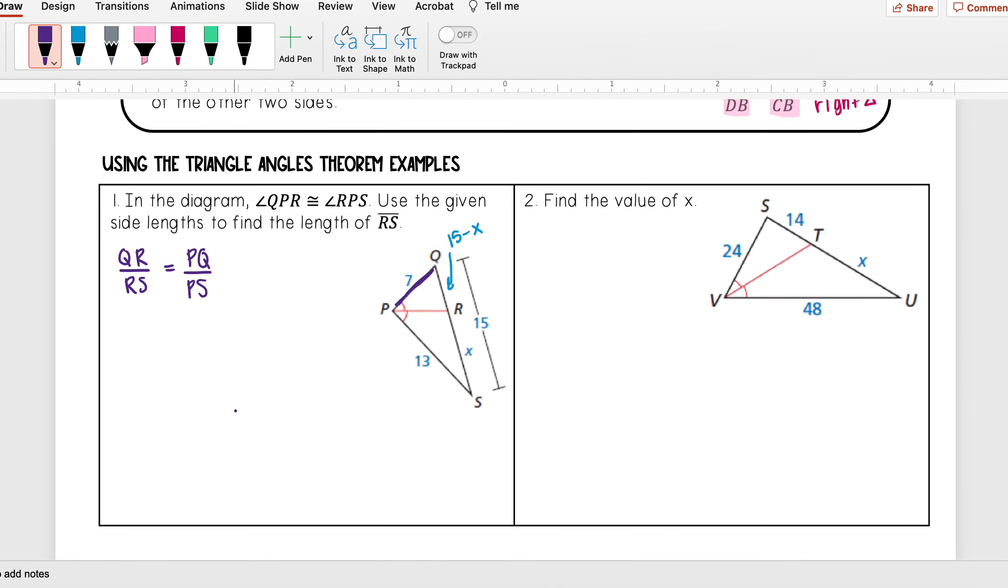And now I'm going to go ahead and substitute in my values. So QR is 15 minus x, RS is x, PQ is 7, PS is 13. And I'm going to go ahead and cross multiply, so I have 15 minus x times 13, put parentheses around my 15 minus x, and then I have x times 7, which is equal to 7x.